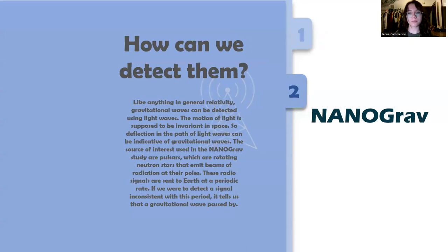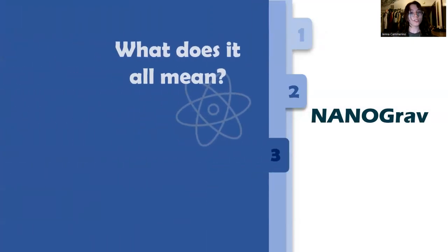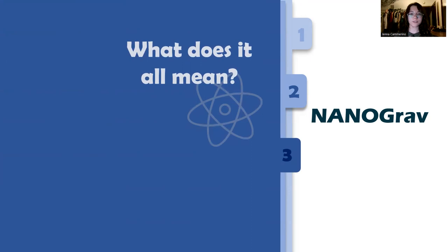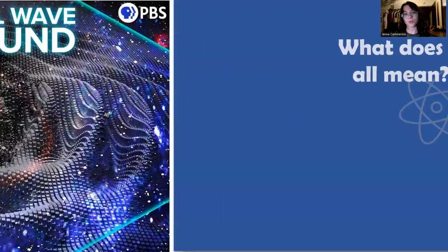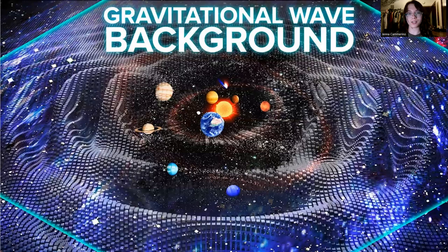So coming back to the NANOGrav paper, what does all this mean? Well, the series of data that they found was consistent with a gravitational wave background, and this might sound familiar if you've heard of the cosmic microwave background radiation.